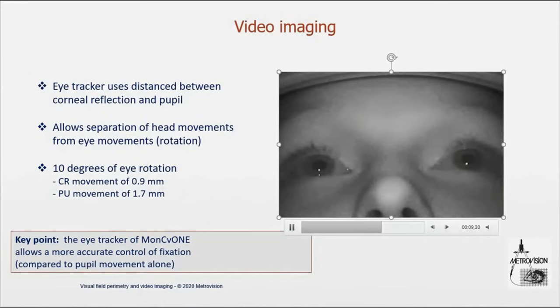And to give you some rough idea, if you make 10 degrees of eye rotation, that corresponds to a movement of the pupil of less than 2 mm. 10 degrees is a lot, and 2 mm is not much. So an eye tracker which is only monitoring the pupil position is not able to detect movement of the eye less than 10 degrees.